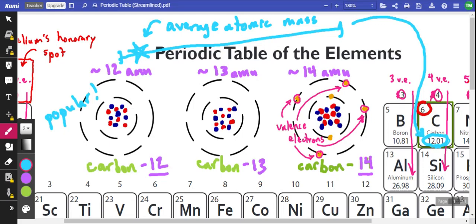We're looking at two more things we can learn from the periodic table here: the number of valence electrons and the average atomic mass.